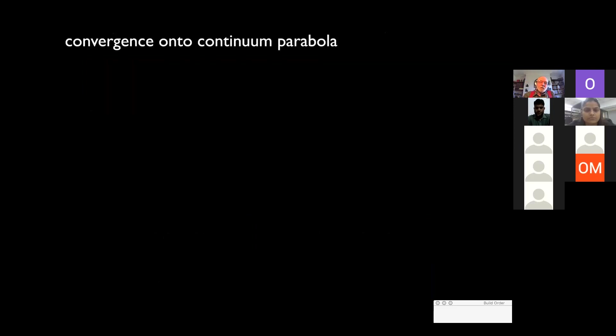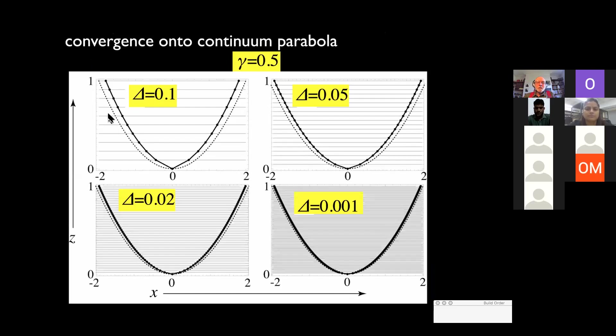And you can study the convergence onto the parabola. I've done some simulations here. If delta is 0.1, 0.05, 0.02, 0.01, you see the discretely refracted track converges onto the parabola that the correct theory predicts.